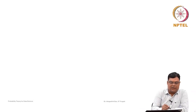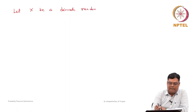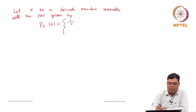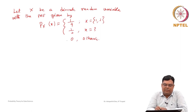Consider a discrete random variable X with probability mass function: P(x) = 1/4 whenever x is 1 or 2, P(x) = 1/2 whenever x is 3, and 0 otherwise. We can verify this is a valid PMF since all values are non-negative and they sum to 1. Note this is not a uniform distribution since the probabilities differ — 1/2 for x=3 and 1/4 for x=1 and 2.